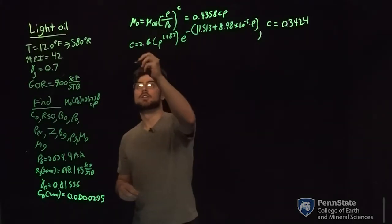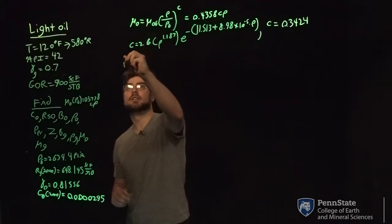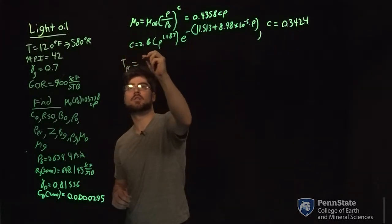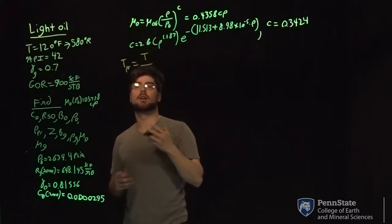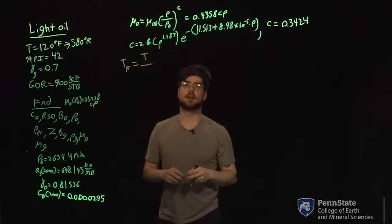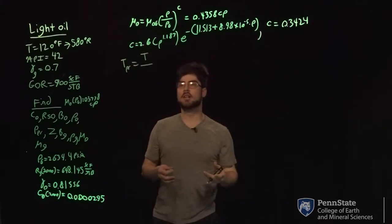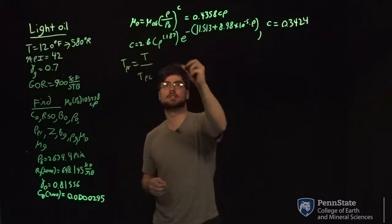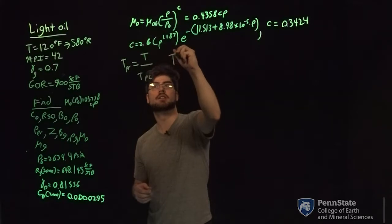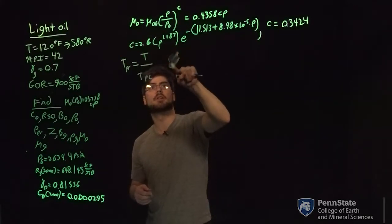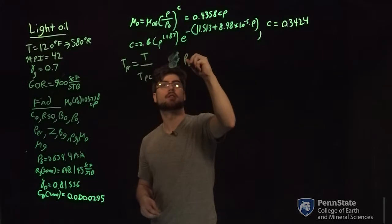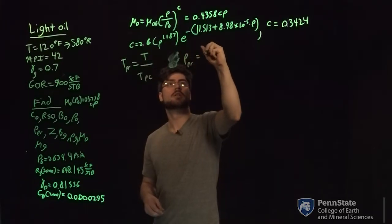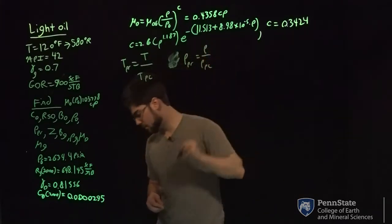To find pseudo-reduced temperature, it's going to be your temperature — 580 Rankine — divided by your TPC. For TPR we use Rankine, so it's 580 divided by TPC. And for PPR, it's going to equal P over PPC.